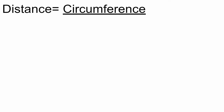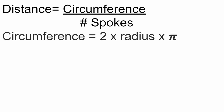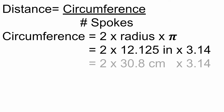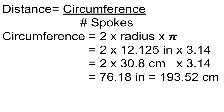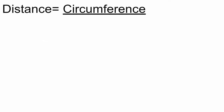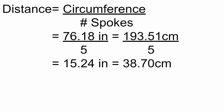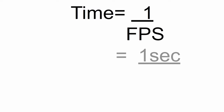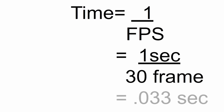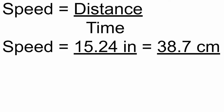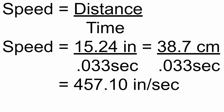Now that we have the basic components, let's start plugging in the numbers, starting with distance. The circumference is 2 times pi, or 3.14, times the radius, which is 12 and 1/8 inches, or 12.125 inches, to get 76.18 inches. Then divide that by the number of spokes — 5 — to get 15.24 inches. For the time, my 30 frames per second camera gives 0.033 seconds per frame. Then finishing the calculation gives us a speed target of 457.1 inches per second.